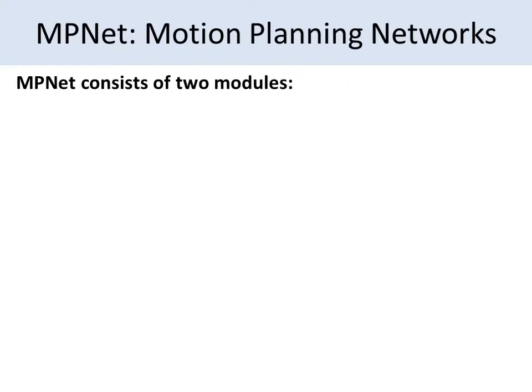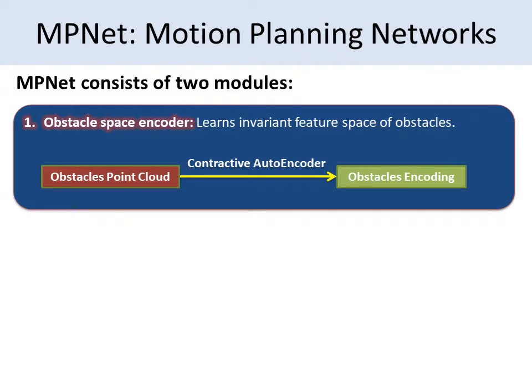MPNet consists of two modules. The first module is a contractive autoencoder that encodes the obstacle space. The contractive autoencoder takes obstacles as raw point cloud data and learns an invariant latent space encoding of the given point cloud through unsupervised learning.